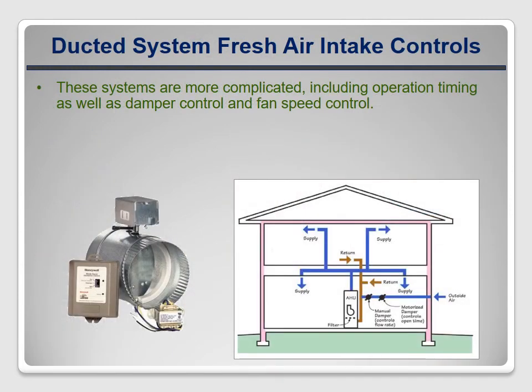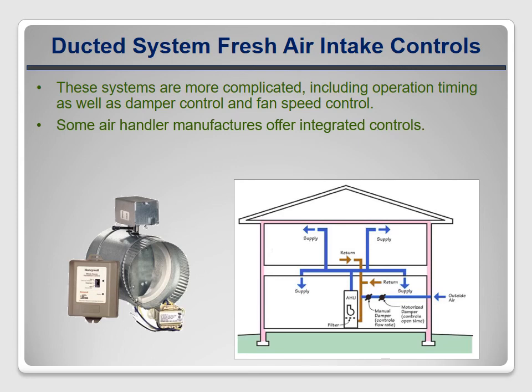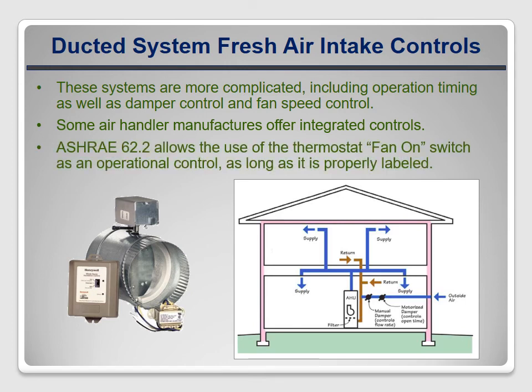Controls for fresh air intakes and ducted systems are more complicated. They may cycle the air handler on at full speed, or they may cycle it using a lower speed tap for ventilation. With some new variable speed systems, they may electronically reduce the fan speed to a very low level so it's quiet and energy efficient. Numerous controls are available — some are add-ons, and some are made by the air handler manufacturers for easier integration with the heating and cooling controls. ASHRAE 62.2 specifically allows the use of the thermostat fan on switch as a means for the occupants to control the system, as long as its function is clearly labeled.